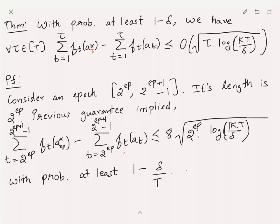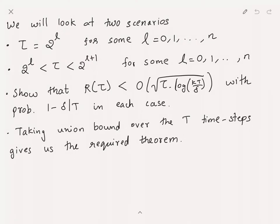We look at two types of tau. First, tau is a power of 2: tau = 2^l for some l in {0, 1, ..., n}. Second, tau lies between two epochs: between 2^l and 2^(l+1). We'll show that in each of these two scenarios, the total cumulative regret R(tau) is at most order sqrt(tau * log(kT/delta)) with probability 1 - delta/T. Since there are at most T such cases, a union bound gives us the required theorem.